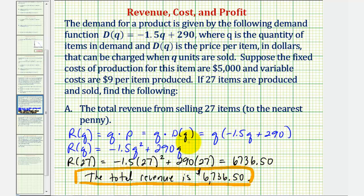Another option here would have been to find P by determining D of 27 and then multiplying 27 times the price. But later on, we are going to need the revenue function in terms of Q in quadratic form.